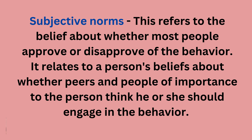The third construct is subjective norms — this refers to beliefs about whether most people approve or disapprove of the behavior, specifically whether peers and people of importance think one should engage in it. For example, you really want to eat a cheeseburger — that is your intention and attitude as a food lover. However, if your family and friends disapprove, saying junk food is bad and you should eat healthily, then subjective norms are working against your intention. This might influence whether you actually go out to eat that cheeseburger.